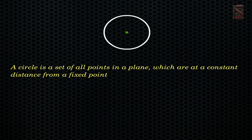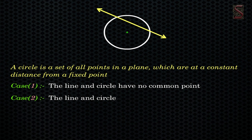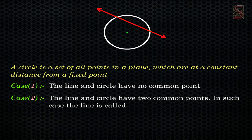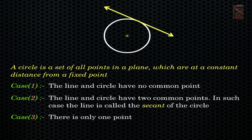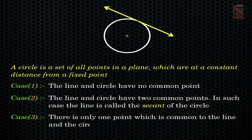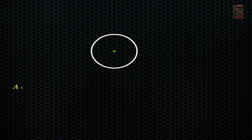Suppose if we are given a line and a circle, then we get three cases. Case one: the line and circle have no common point. Case two: the line and circle have two common points — in such a case the line is called a secant of the circle. Case three: there is only one point which is common to the line and the circle.